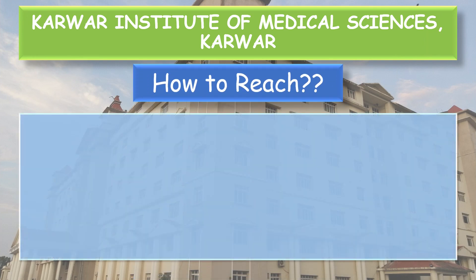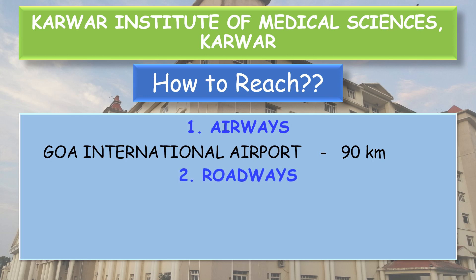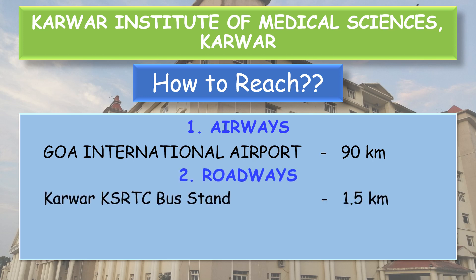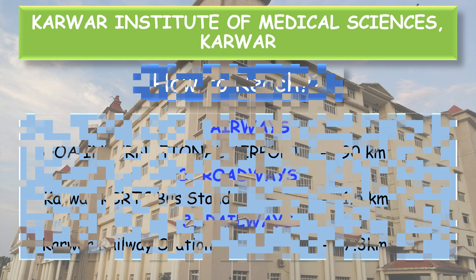How to reach the college? For those coming from far away: by airway, the nearby international airport is Goa International Airport, which is 90 km from the college. By road, Karwar KSRTC bus stand is 1.5 km from the college. By railway, Karwar Railway Station is 7.3 km away.